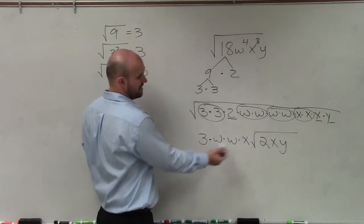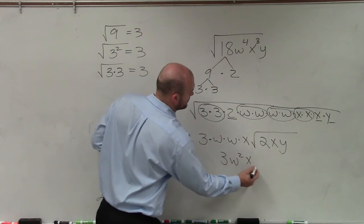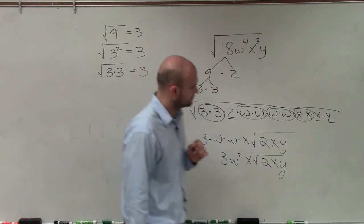Now we simplify on the outside. And you notice I have w times w which can be w squared. And there you go.